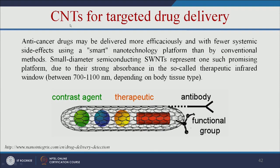We can also use carbon nanotubes for targeted drug delivery. The carbon nanotube can be loaded with a contrast agent for imaging, an anti-cancer drug for therapy, and an antibody for targeting only cancer cells. We can also add a functional group that provides biocompatibility and increases circulation time. This is called a multifunctional or theranostic nanoparticle because it carries both a contrast agent and a therapeutic agent.